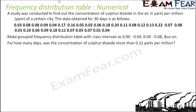Let's take one more numerical. A study was conducted to find the concentration of sulfur dioxide, a poisonous gas in the air, in parts per million of a certain city. The data is recorded for 30 days and we have to create the grouped frequency distribution table. They have given one sample class, and here you can see the upper limit and lower limit of consecutive classes matching, which means it is an overlapping class.